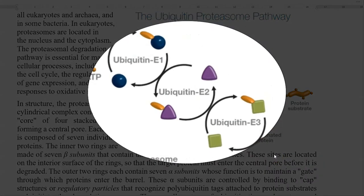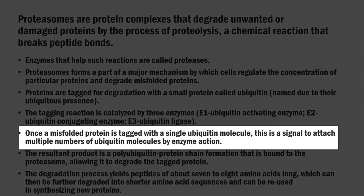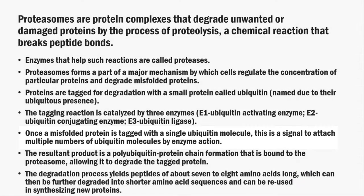All three enzymes help in binding ubiquitin to the misfolded or damaged protein to carry out their degradation. Once a misfolded protein is tagged with a single ubiquitin molecule, it serves as a signal to attach multiple ubiquitin molecules by enzyme action. The resultant polyubiquitin protein chain is bound to the proteasome, allowing the tagged protein to be degraded. The degradation process yields peptides of about 7 to 8 amino acids long, which can be further degraded into shorter amino acid sequences and reused for synthesizing new proteins.